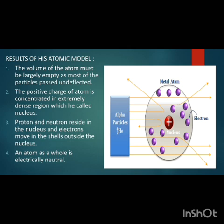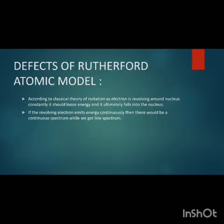The second drawback was that while revolving, the electron should give a continuous spectrum according to Rutherford's model. However, it was already observed that electron transitions inside atoms always give a line spectrum, not a continuous spectrum. So Rutherford's model gave the wrong prediction here.